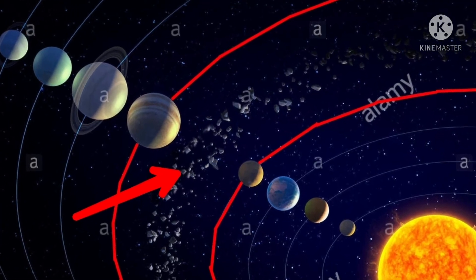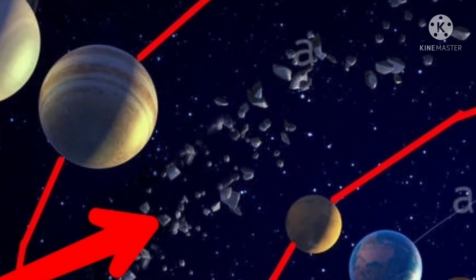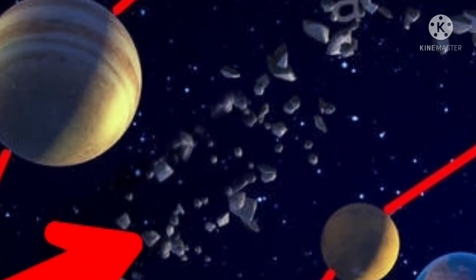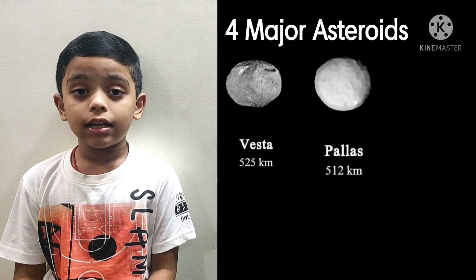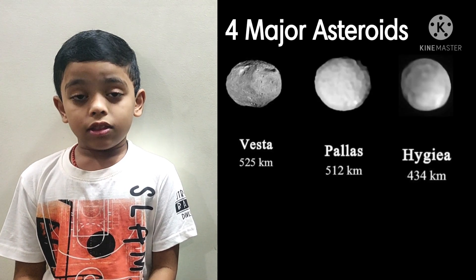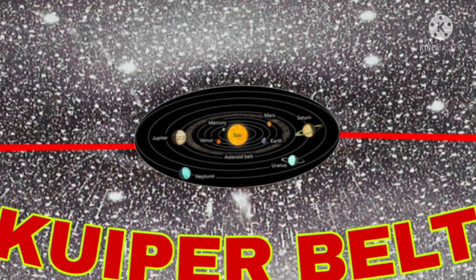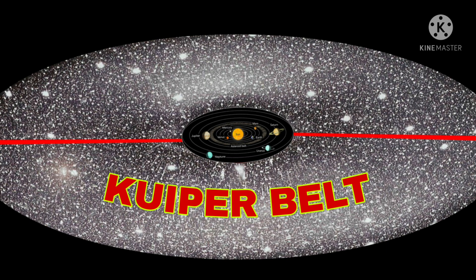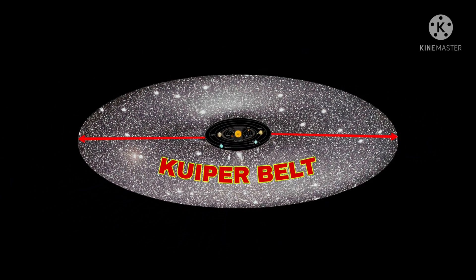There is an asteroid belt which lies between the orbits of Mars and Jupiter. It features a large number of irregularly shaped asteroids. The four major asteroids are Vesta, Pallas, Hygiea, plus the dwarf planet Ceres.